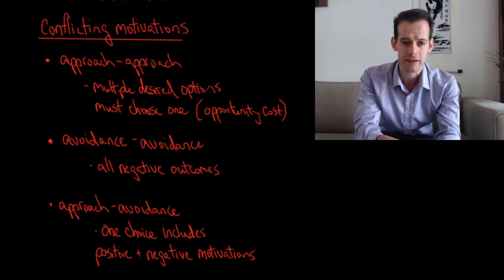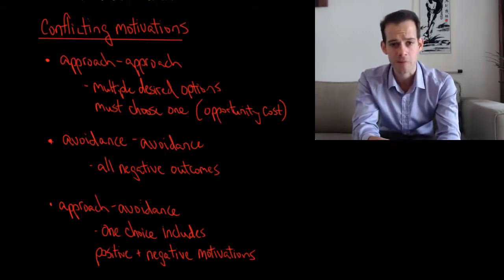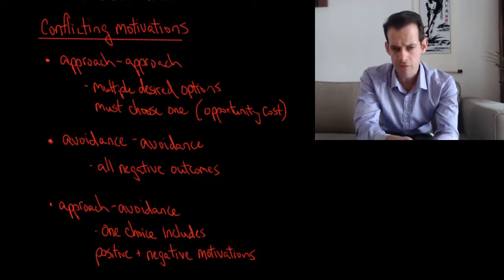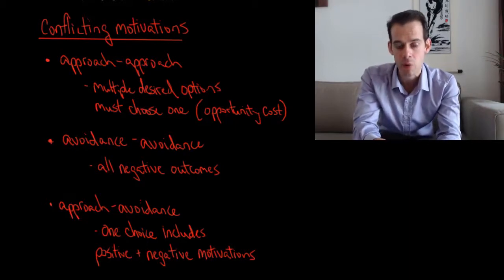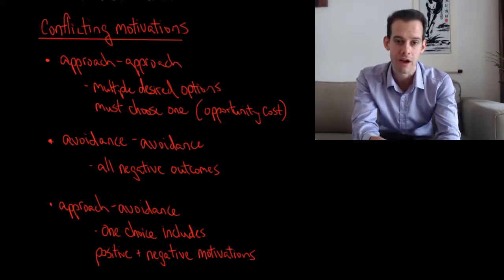There are a few different types of conflict that we can have between our motivations. One type of conflict is called an approach-approach conflict. This is the idea where we have multiple desirable options, but we can't choose all of them. For instance, if you were going to the movie theater and see a movie, maybe there's three movies that you want to see on that particular night, but of course, you can't see all of them. You can only watch one of the movies.